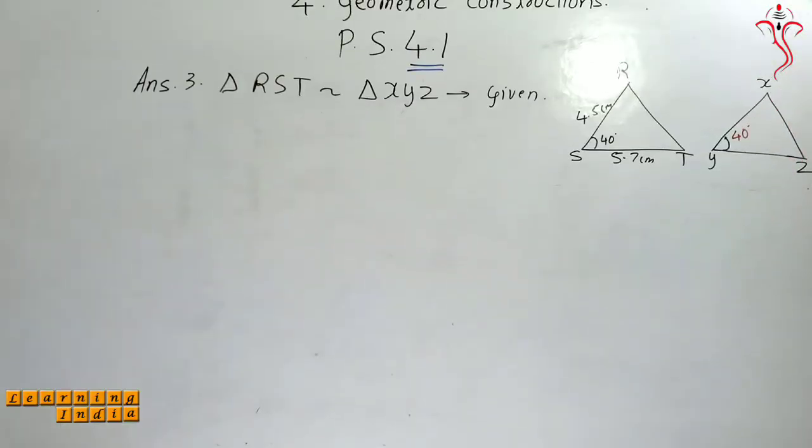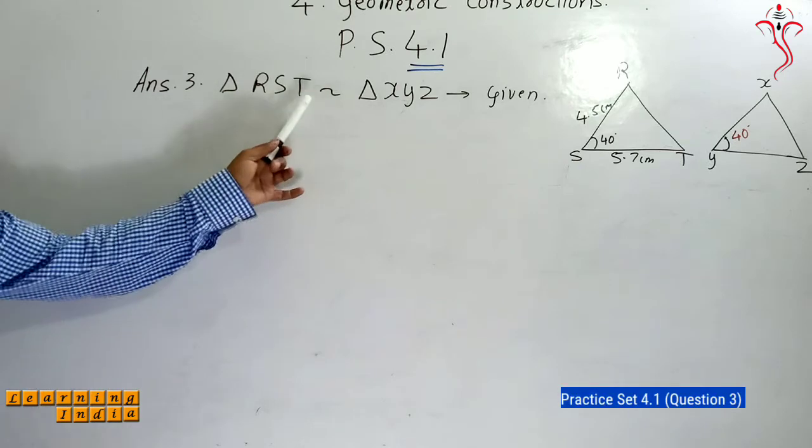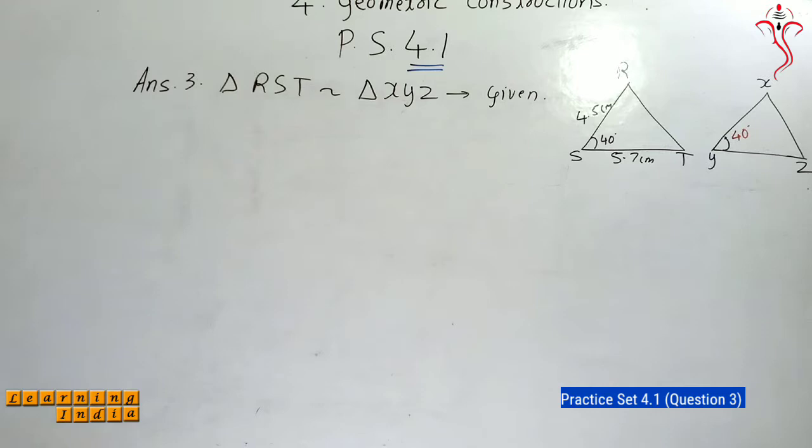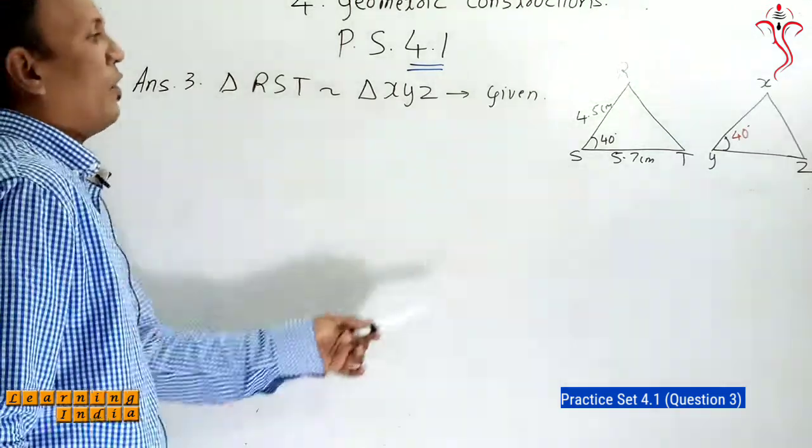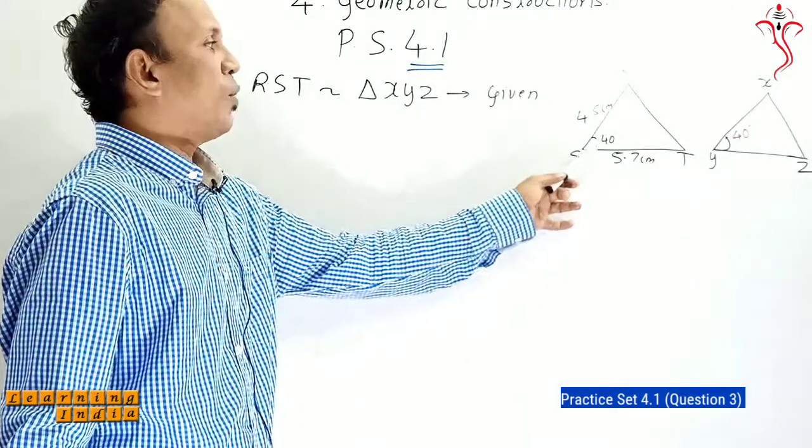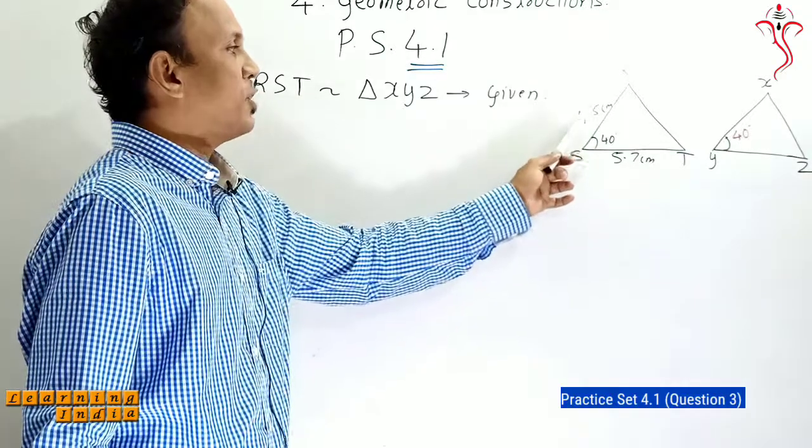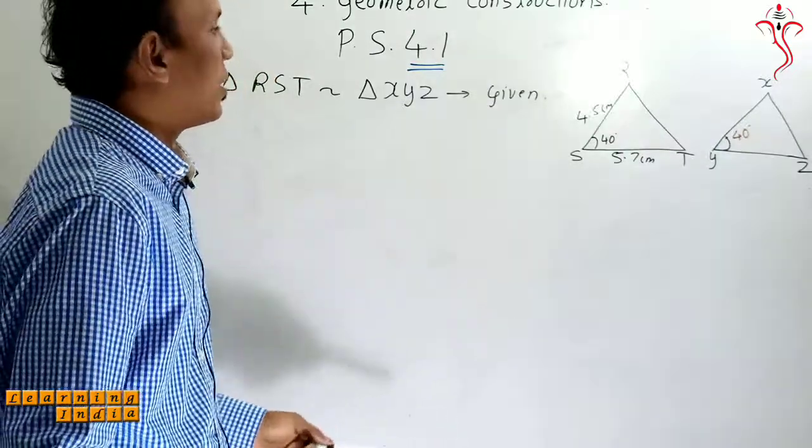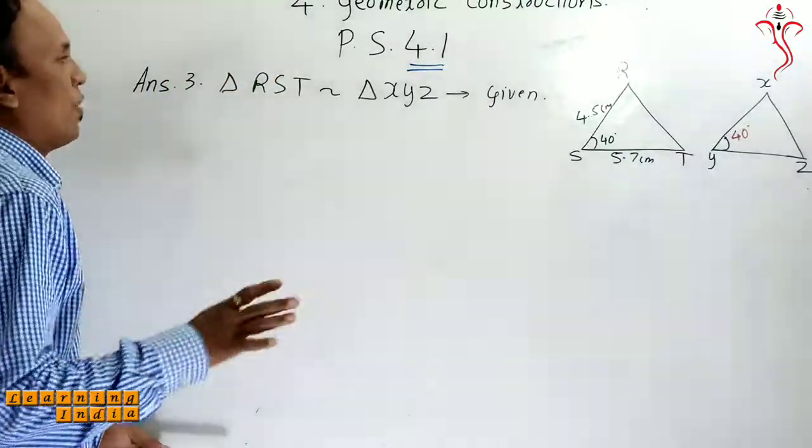So in question number 3, I have given you triangle RST similar to triangle XYZ. Here angle S value is 40 degrees, RS is 4.5 cm, ST is 5.7 cm.